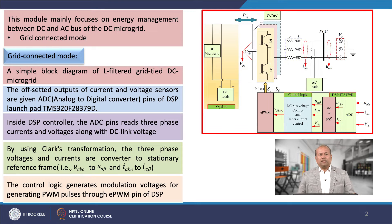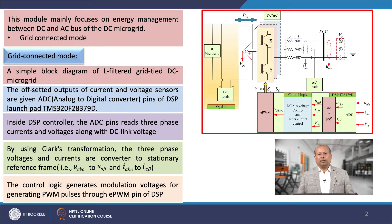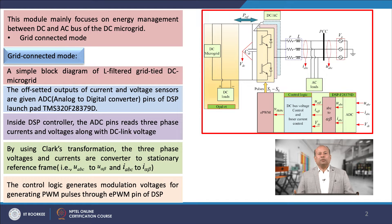The measured voltages and currents are biased to shift the signal above zero level. The offset output of current and voltage sensors are given to the analog to digital converter, the ADC pins of DSP launch pad TMS320F28379D. Inside the DSP controller, the ADC pins read the 3-phase currents and voltages along with the DC link voltages. By using Clark's transformation, the 3-phase voltages and currents are converted to the stationary reference frame from ABC to alpha-beta, such as U_ABC to U_αβ and I_ABC to I_αβ.